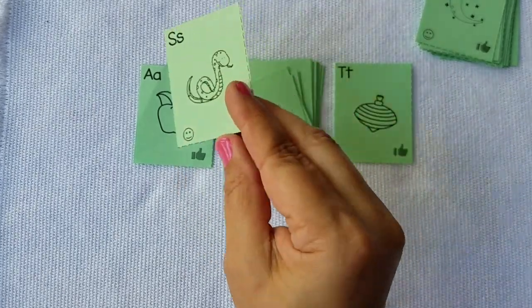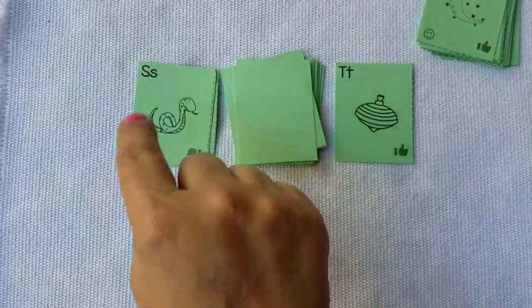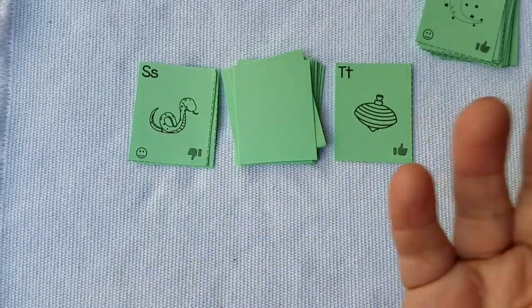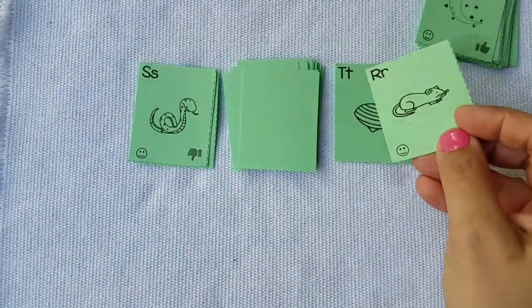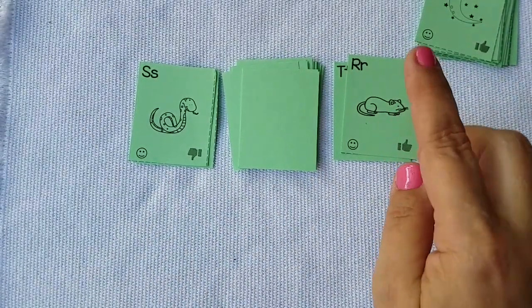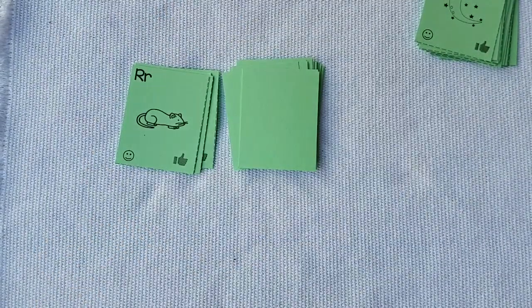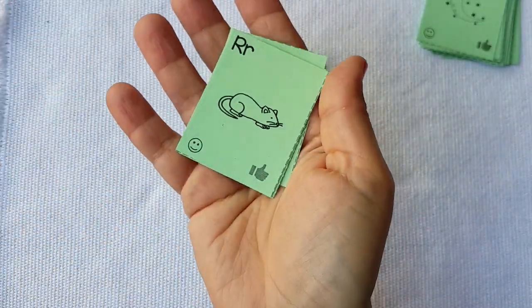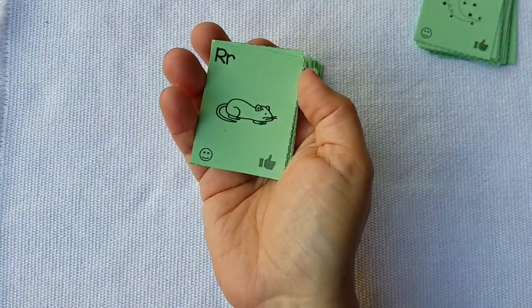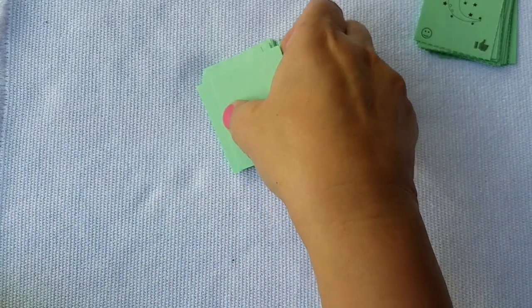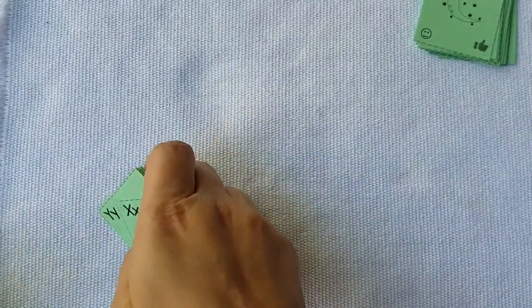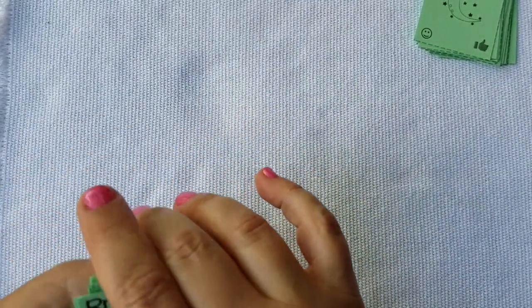In top it, we just turn it over one more. I turned over S and I have to say it: S, snake, S. And you turned over R. R, rat, R. I have the thumbs down, you have the thumbs up, so you win all four cards. So that's how I was able to make letters into a top it or war game. Of course, you can play memory.